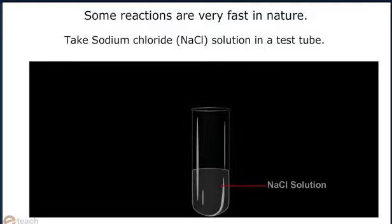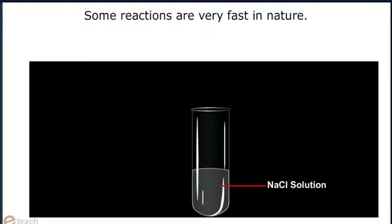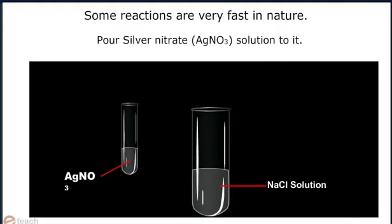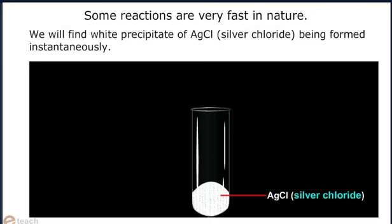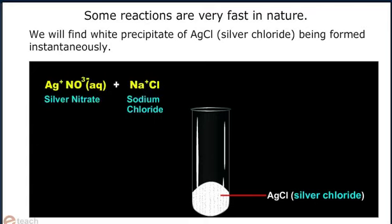Take sodium chloride solution in a test tube. Pour silver nitrate solution to it. We will find white PPT of AgCl, that is silver chloride, being formed instantaneously. The reaction taking place is AgNO3 plus NaCl gives AgCl plus NaNO3.